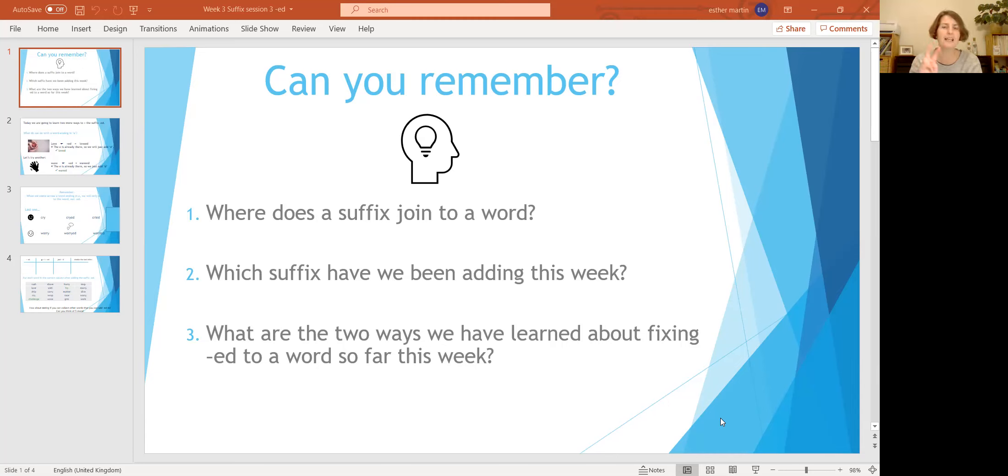And if the vowel was just before the very last letter, then we doubled the last letter before adding -ed. So that was a slightly tricky one, wasn't it? But we've learned two ways to add the suffix -ed, and today we're going to learn two more.